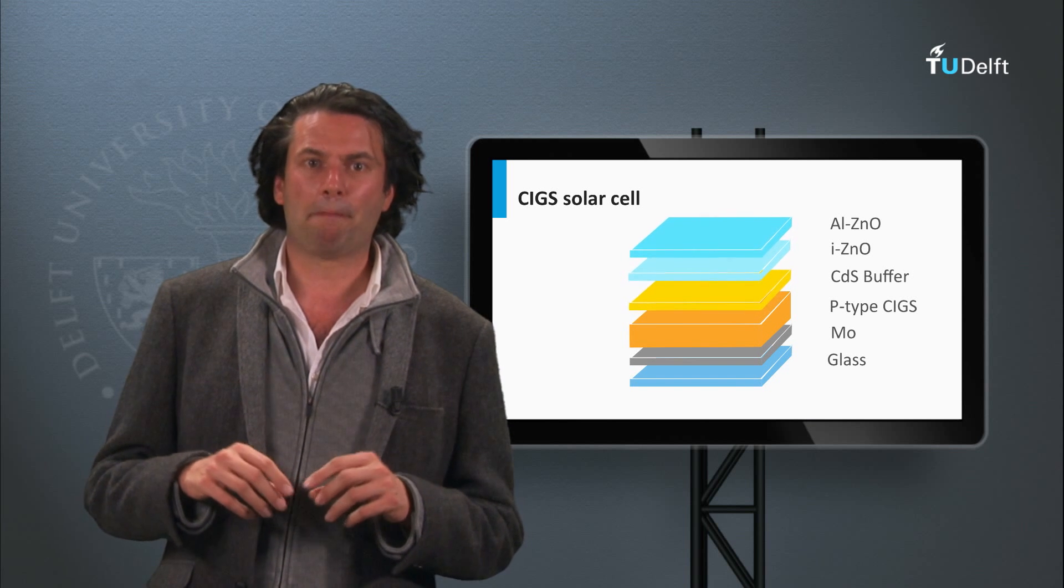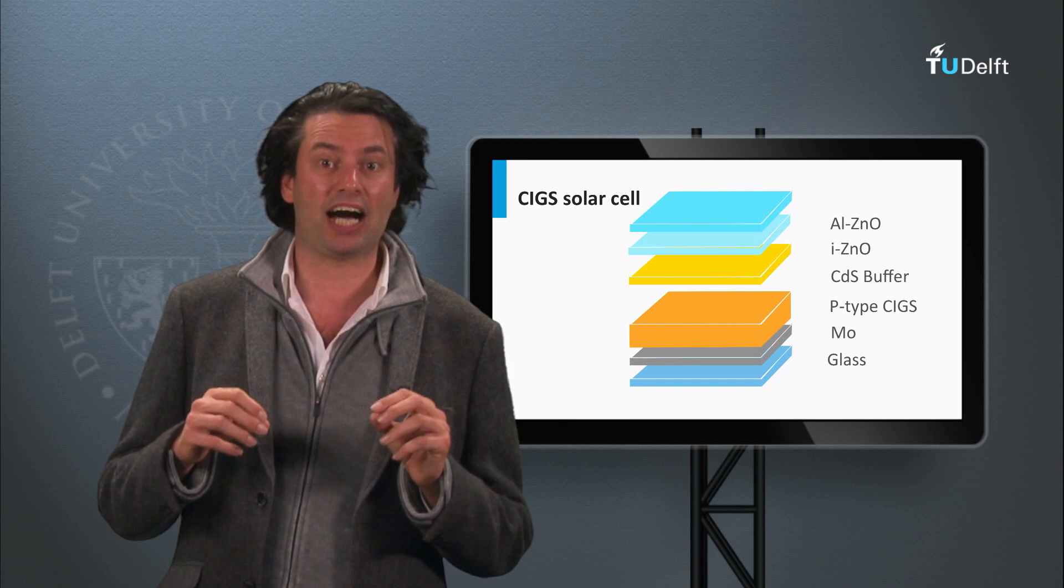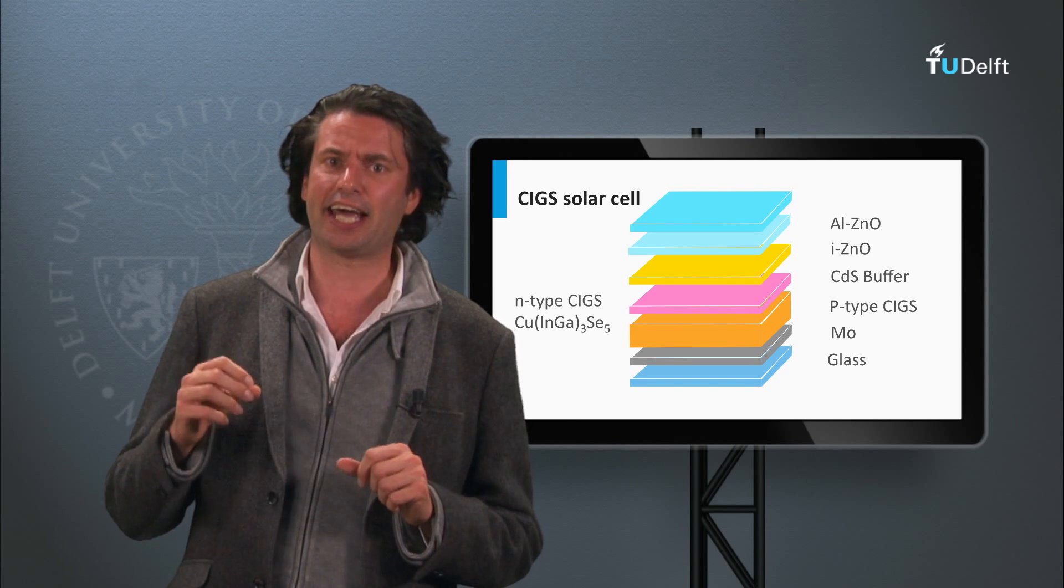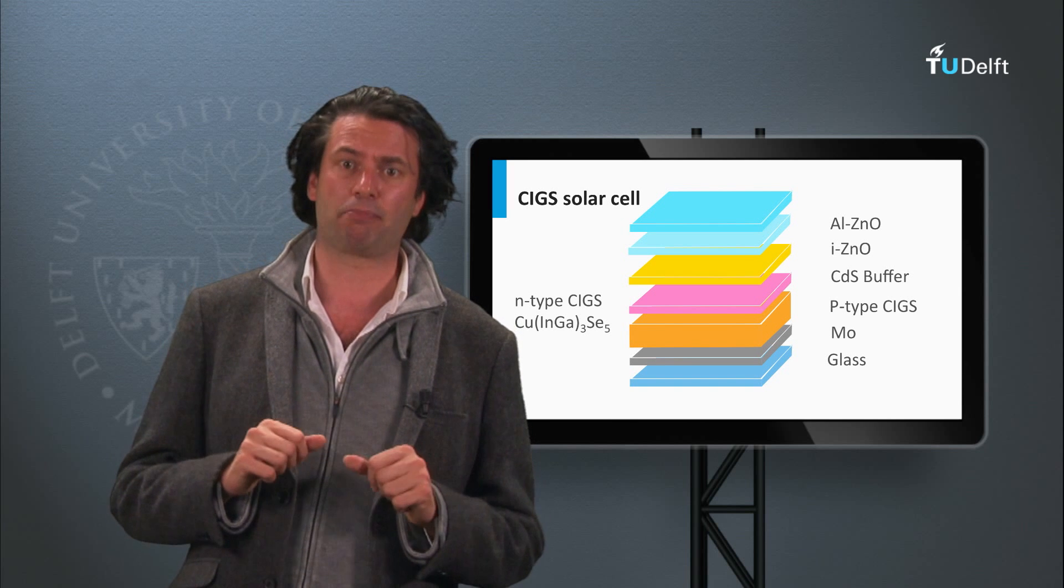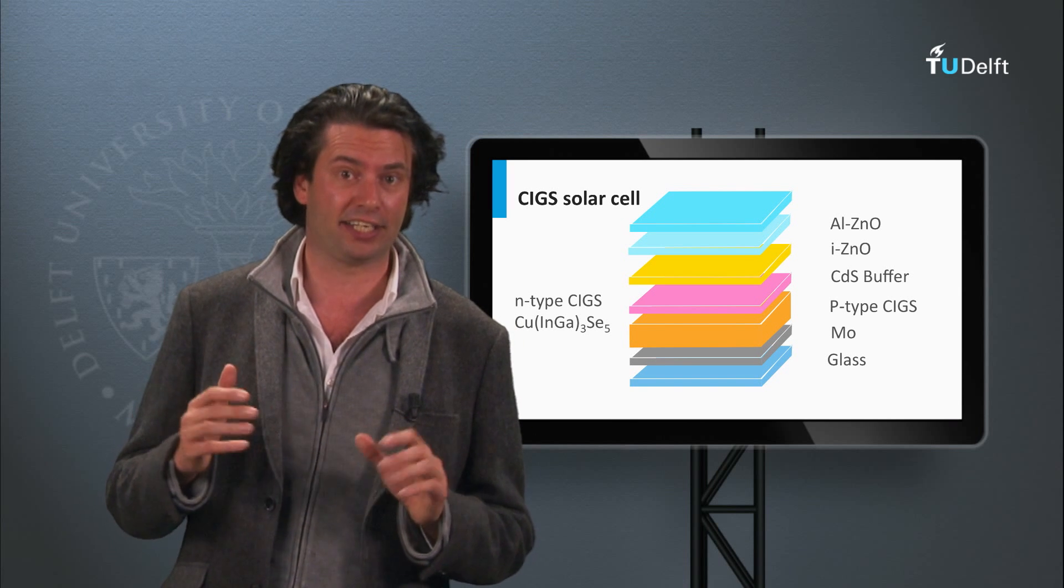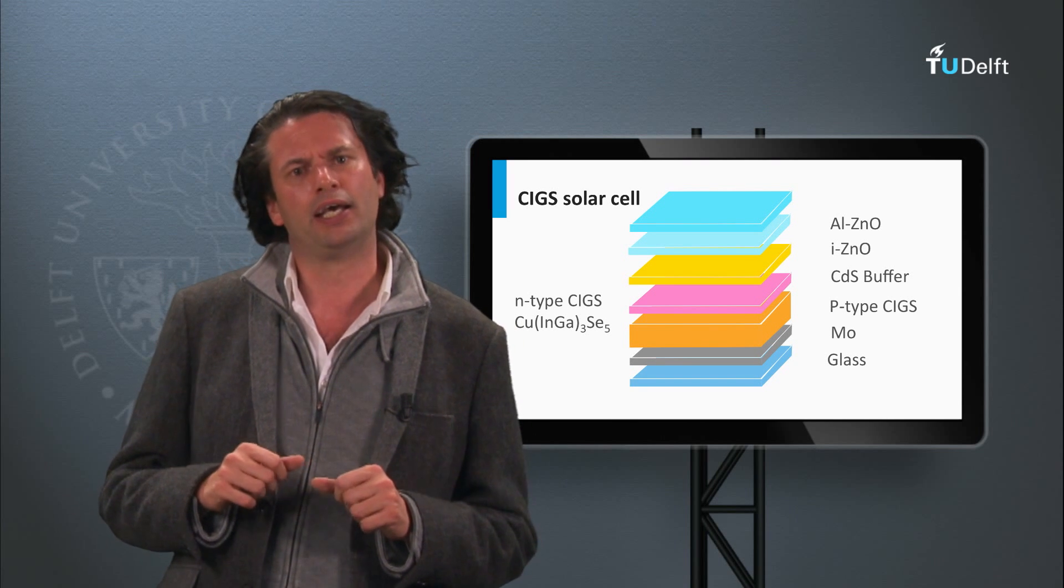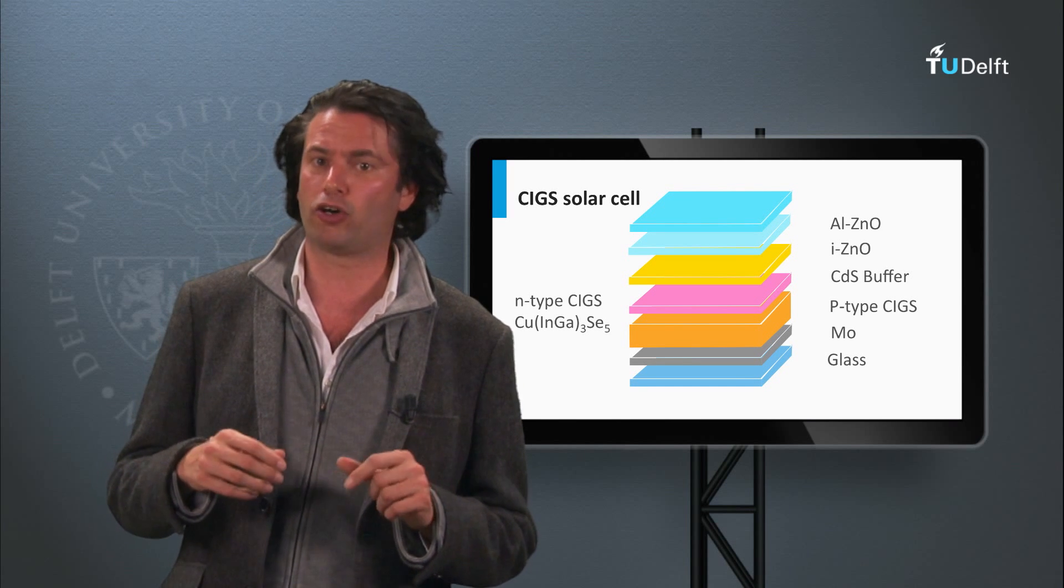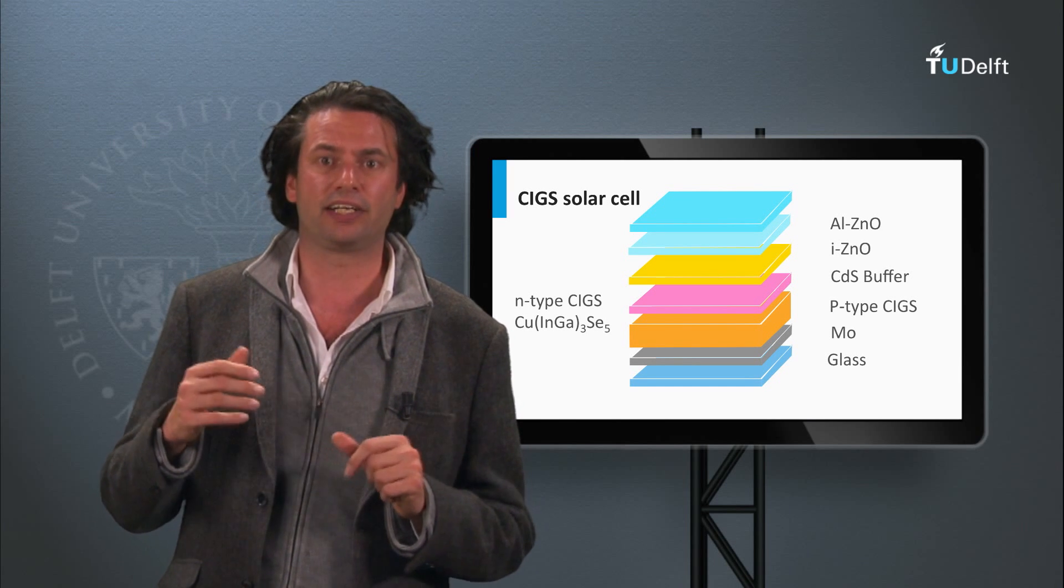This can be prevented by placing an n-type CIGS type of layer between the p-type CIGS and the cadmium sulfide interface, which screens the cadmium sulfide CIGS interface from the holes. The n-type CIGS is an indium-rich alloy, like copper indium gallium selenide sulfide.